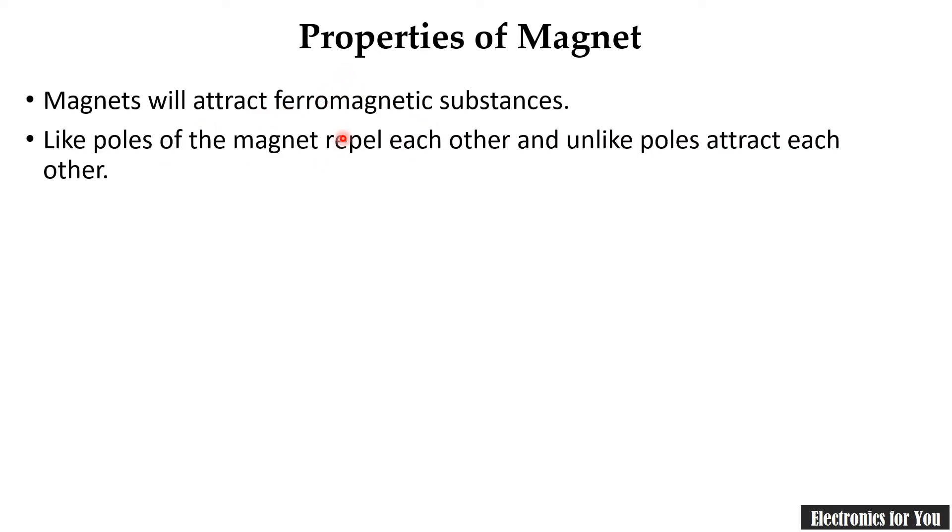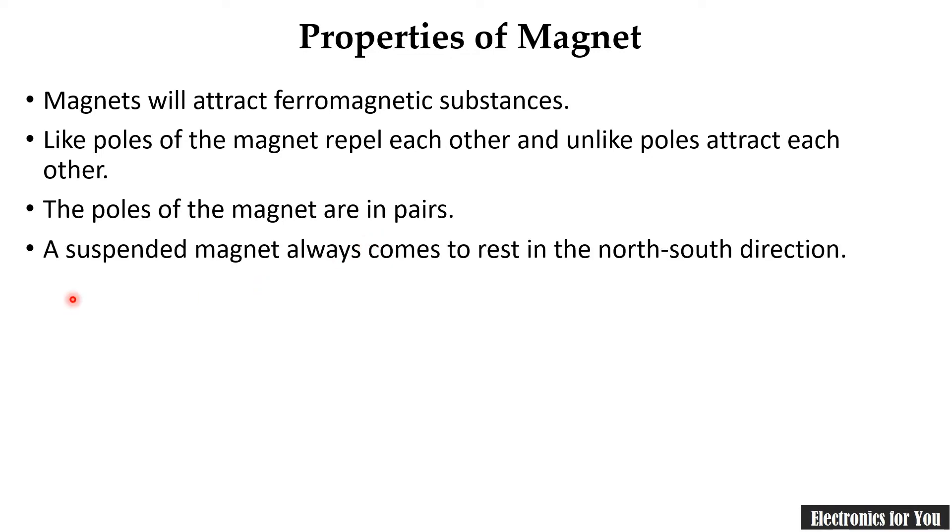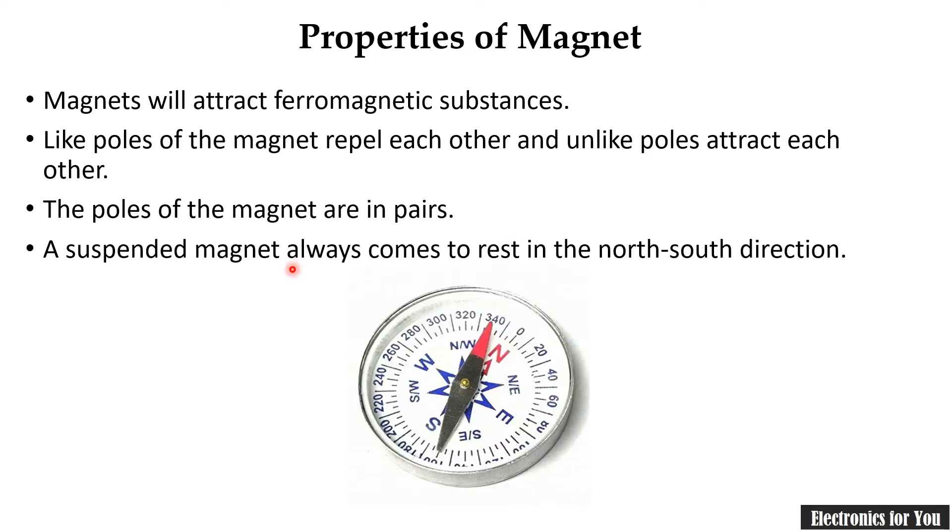It attracts ferromagnetic substances. Then, it has two poles and the like poles repel each other, whereas unlike poles attract each other. The poles of the magnets are always in pairs. Then, if the magnet is suspended, it will rest in the north-south direction just like this.